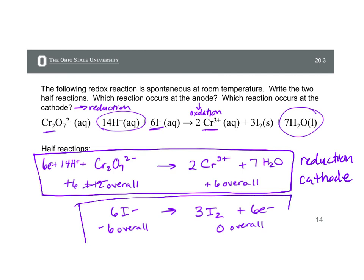Which means for our iodine reaction, we lose electrons. This is oxidation. And we know that oxidation occurs at the anode.